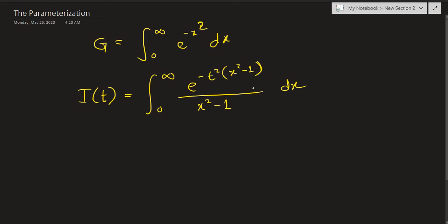Looking at this parameterization it's highly unintuitive, but you will realize in a few steps why it is helpful. Notice that when we differentiate with respect to t, this denominator x squared minus 1 is going to get multiplied in the numerator and cancel out with the denominator — so we are effectively getting rid of that term. Let's go ahead and differentiate both sides with respect to t.